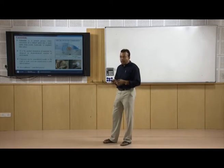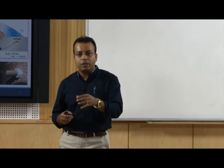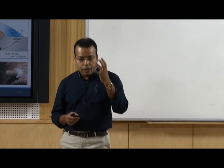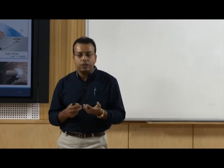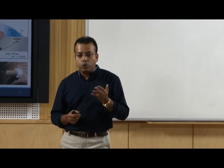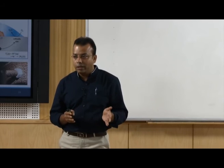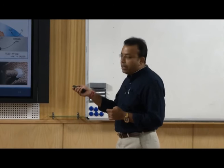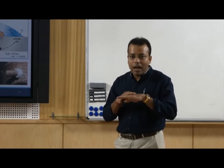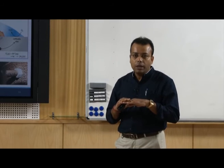Now we will go into the details about corrosion. Corrosion is a natural process where conversion of a refined metal into a more stable form occurs. The best example is iron — if we keep any iron product in the environment, after a certain time it absorbs water molecules from the environment, a reaction takes place, and iron oxide is formed, which is a totally different state from iron. It will not carry properties like iron, but it will be in a stable form — the rusting or iron oxide will be stable for a longer time on the material surface.